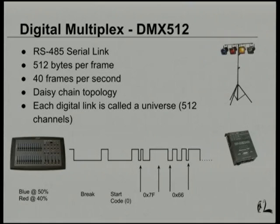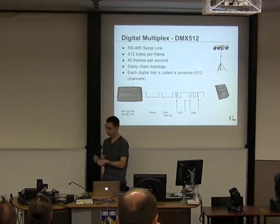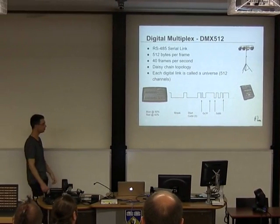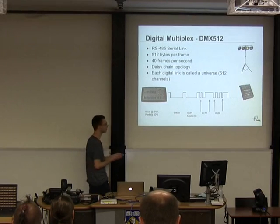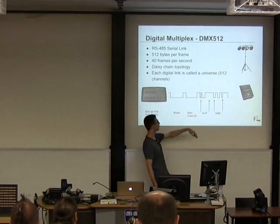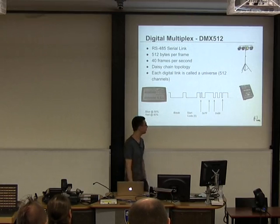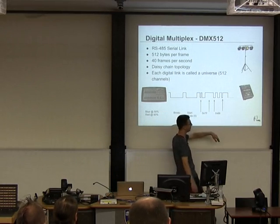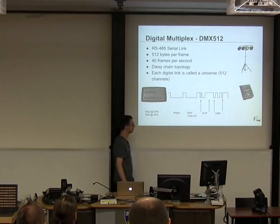The important bit is that devices on these chains have start addresses, normally set by little dip switches — or on newer devices an LCD panel — which tells the device the first channel of data it should listen to. In our example the start address is 1. But with multiple devices, the first would have start address 1, the second would have start address 5, and so on. You can chain devices together like that.